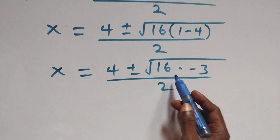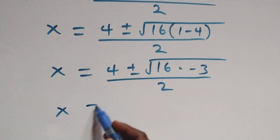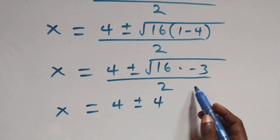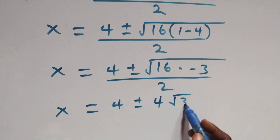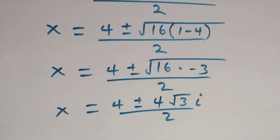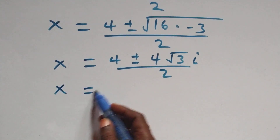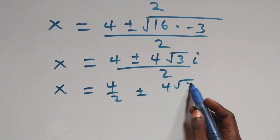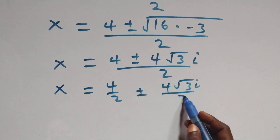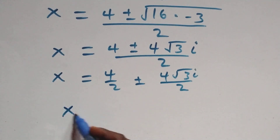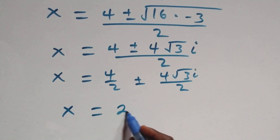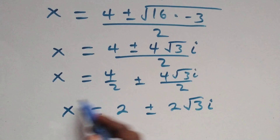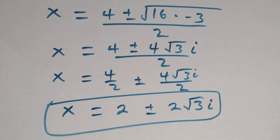Separating the square root of 16, that's 4, we bring it out and get x equals 4 plus or minus 4 times the square root of negative 3, which is root 3 times i, over 2. This simplifies to x equals 4 over 2 plus or minus 4 root 3i over 2, giving x equals 2 plus or minus 2 root 3i. These are two complex solutions.